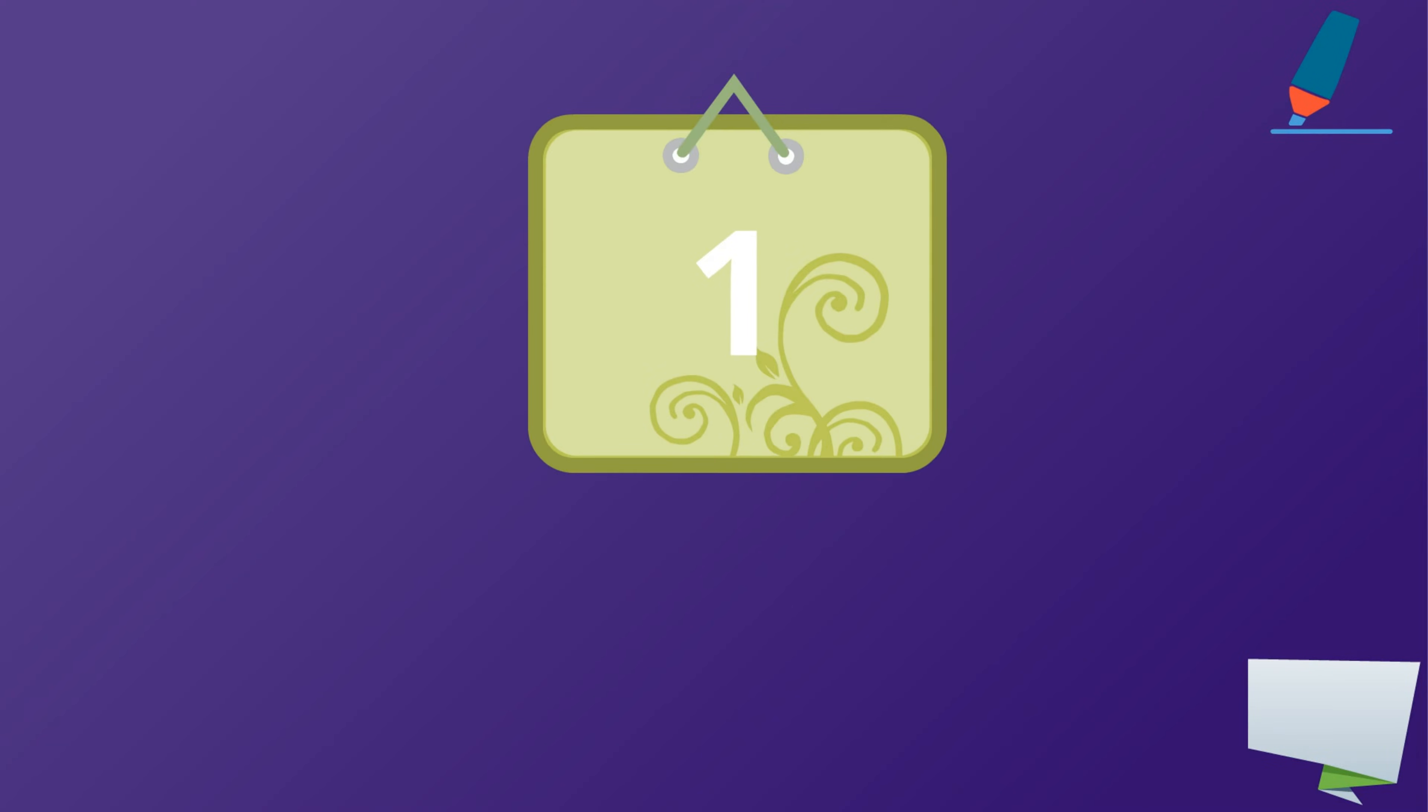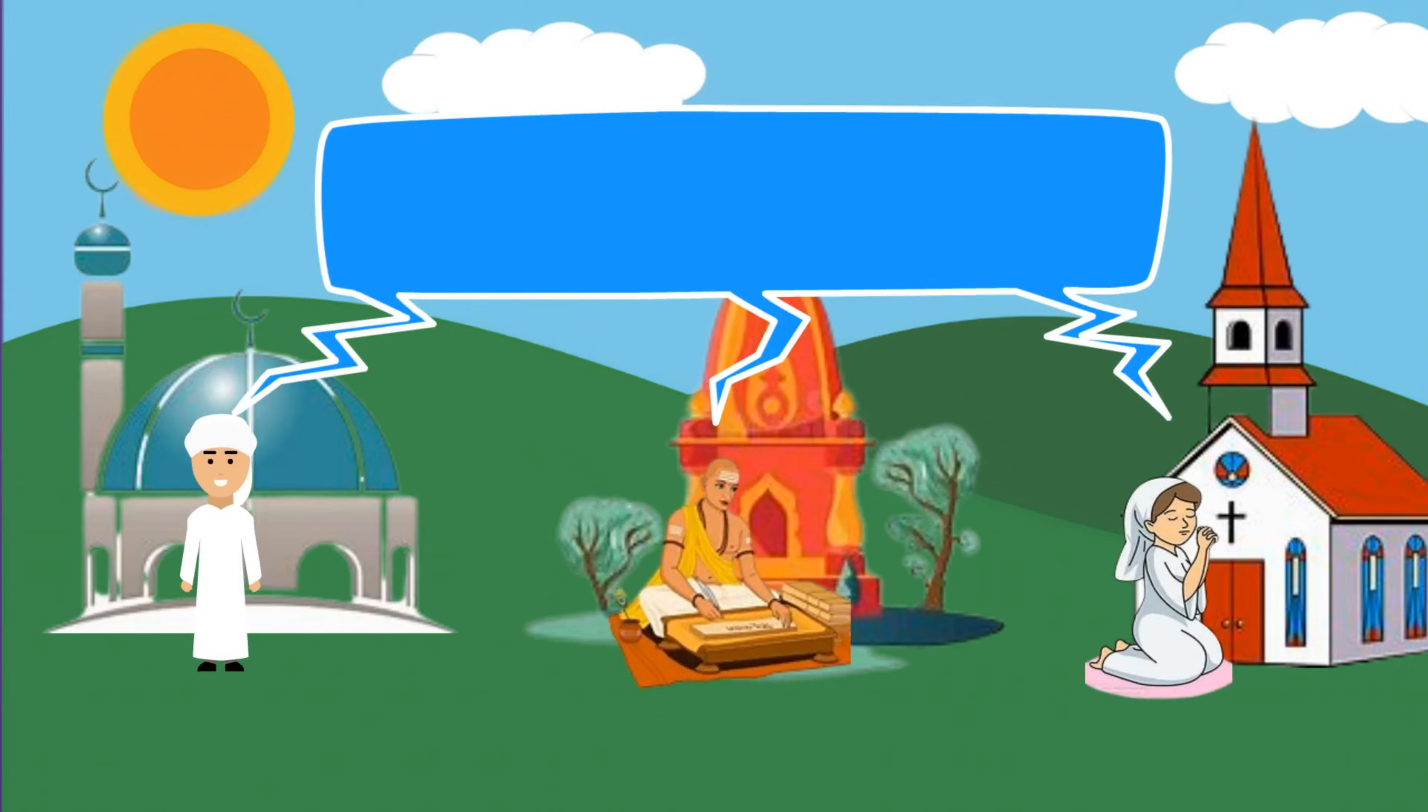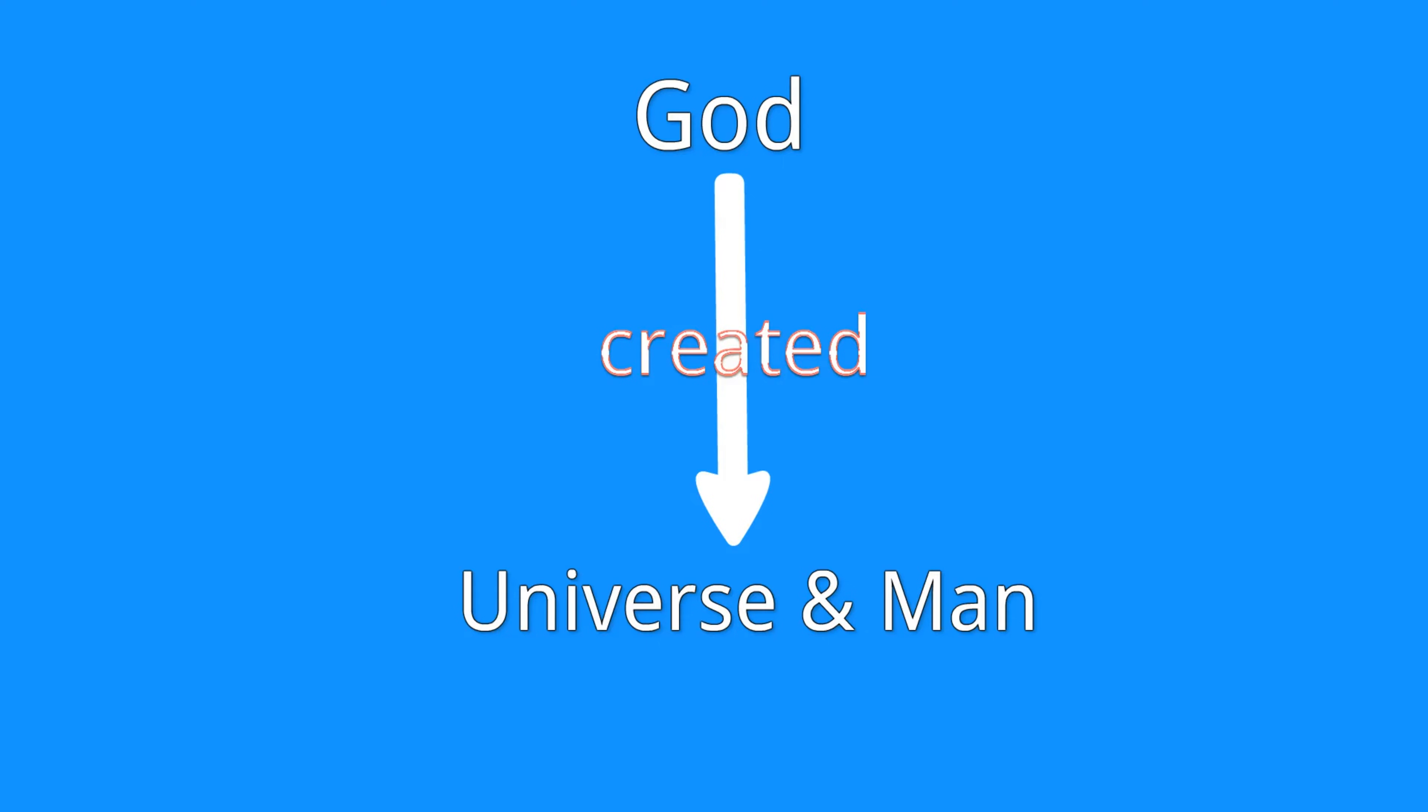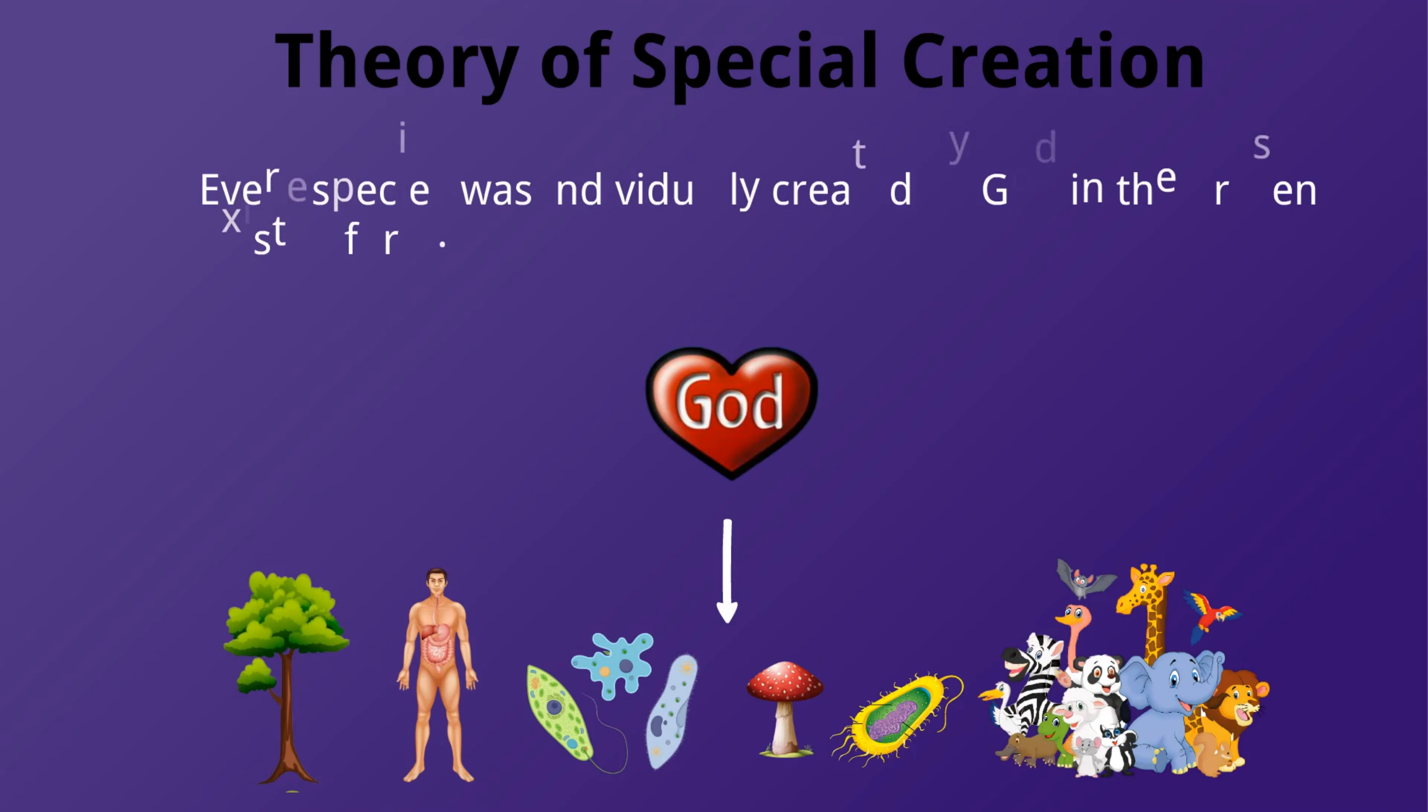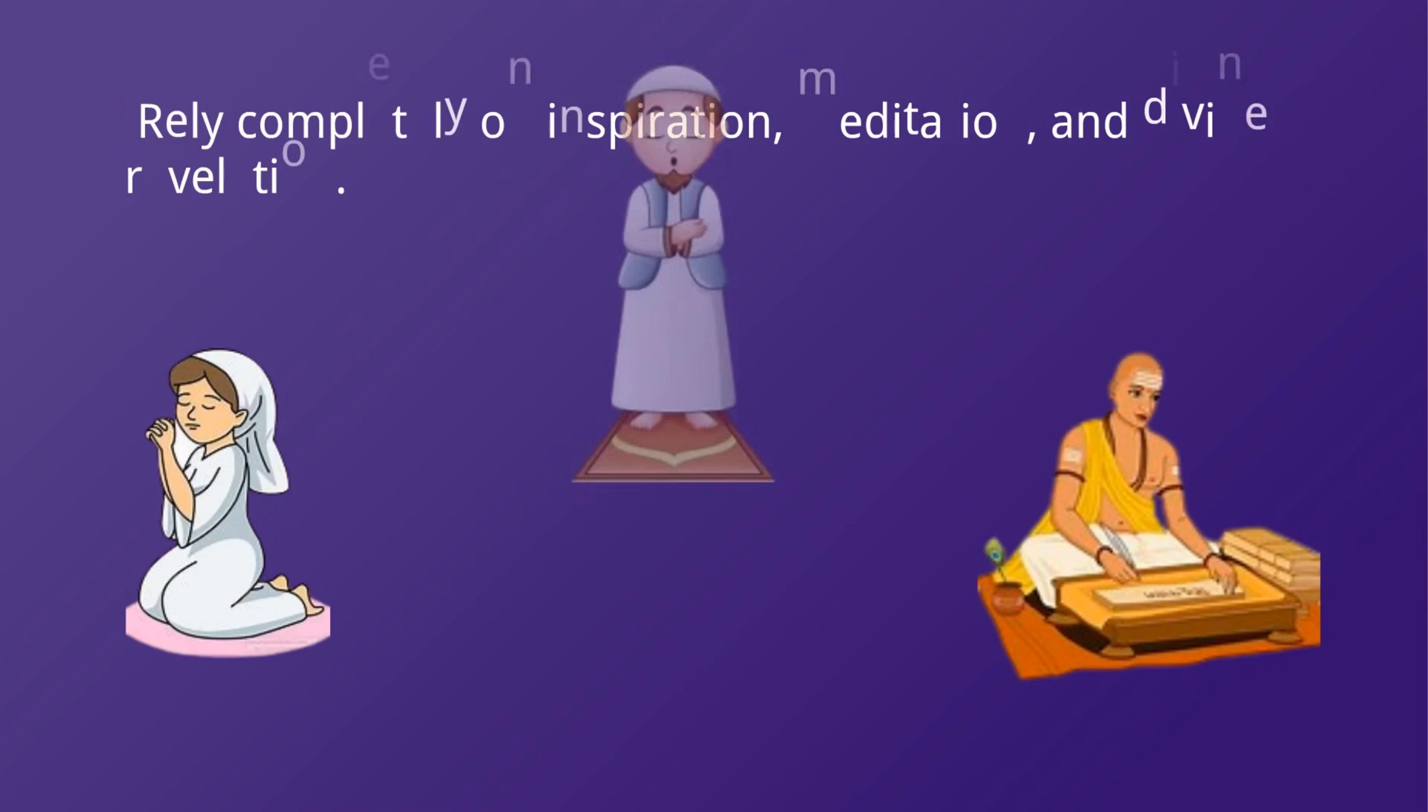First, the concept of special creation. Believers of this concept are called creationists. They believe that God created the universe and man through a supernatural event at a particular time in the past. This theory explains that every species was individually created by God in the form in which it exists today. Species are not capable of any change, so this theory rejects any other possible ideas like evolution. It relies completely on inspiration, meditation, and divine revelation.